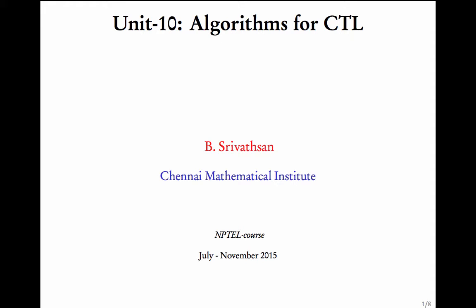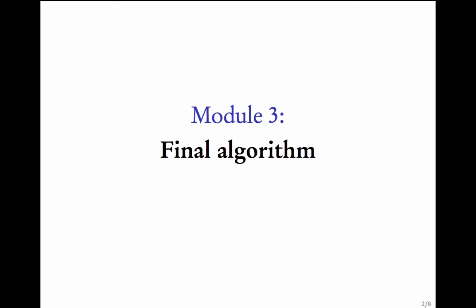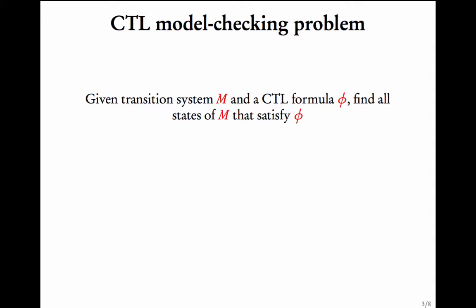We are in unit 10 of this course, talking about algorithms for computation tree logic. In modules 1 and 2, we described the prerequisites for giving the final algorithm. We will now see the algorithm in this module. The problem is: given a transition system M and a CTL formula phi, find all states of M that satisfy phi. This is known as the CTL model checking problem.